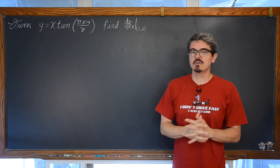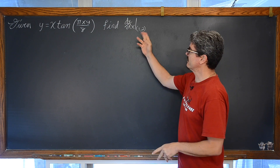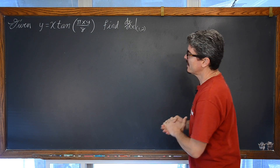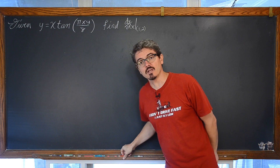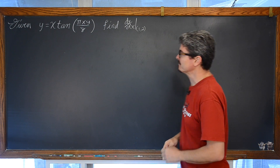Five points for finding the derivative at a point, and two for finding the equation of the tangent line. So let's get started.